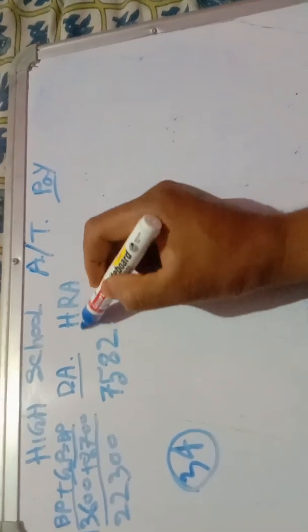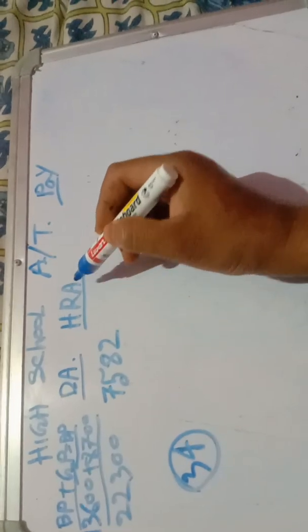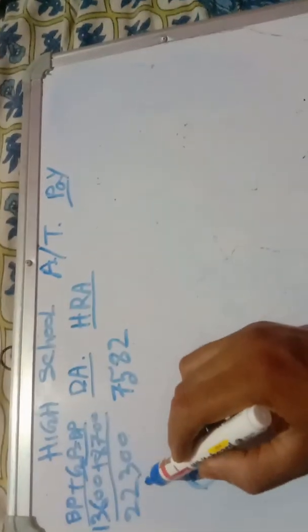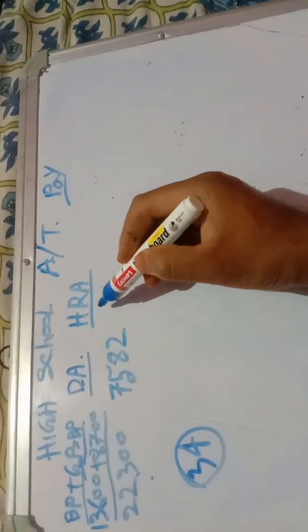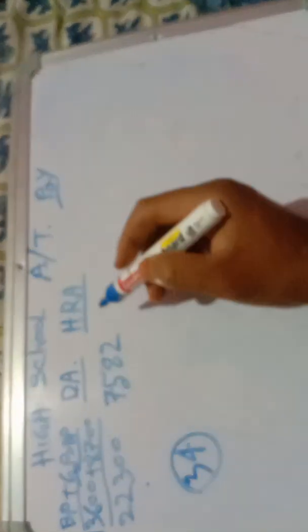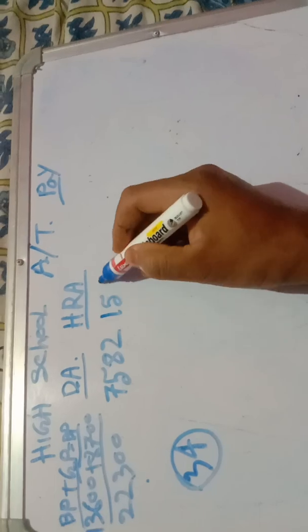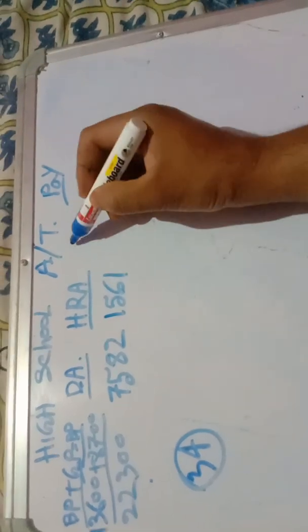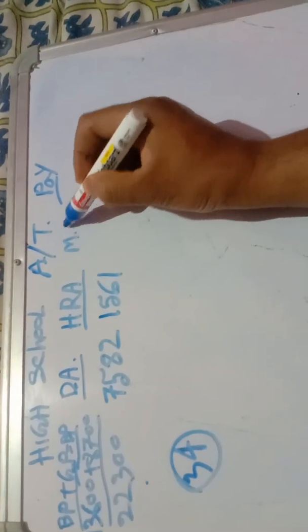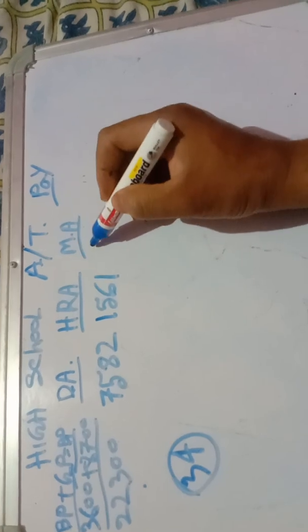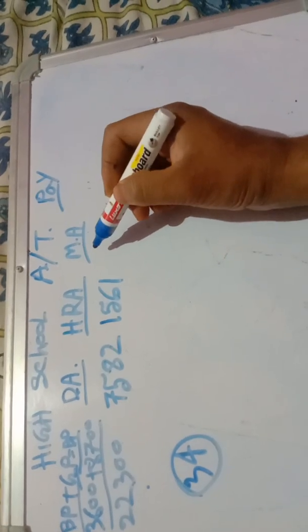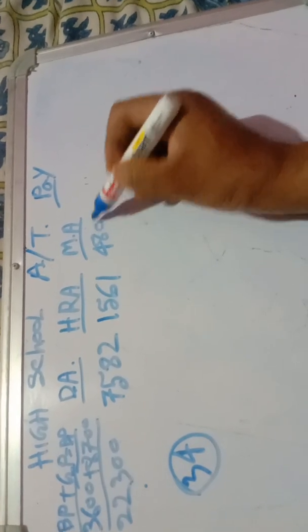Housing rent allowance, basic 7%, 7%. 1561. Medical allowance 480.